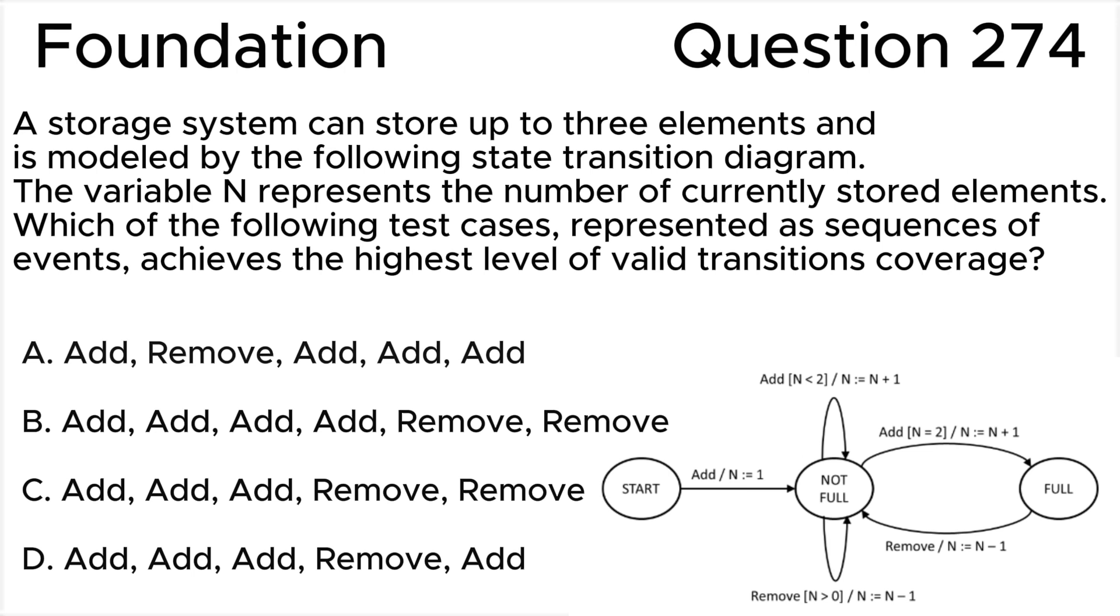Which of the following test cases, represented as sequences of events, achieves the highest level of valid transitions coverage? Option A: Add, Remove, Add, Add, Add. Option B: Add, Add, Add, Add, Remove, Remove. Option C: Add, Add, Add, Remove, Remove. Option D: Add, Add, Add, Remove, Add.